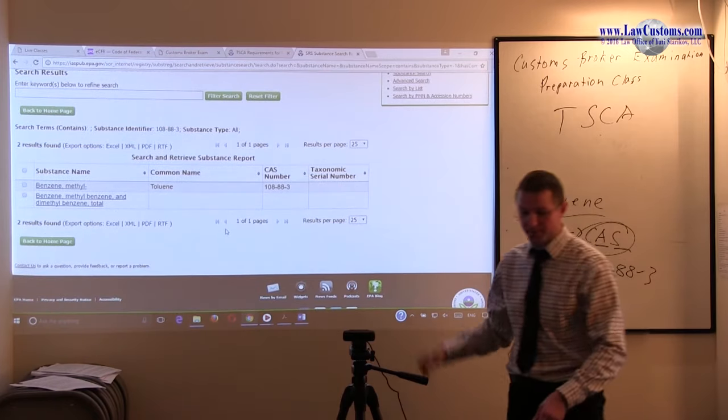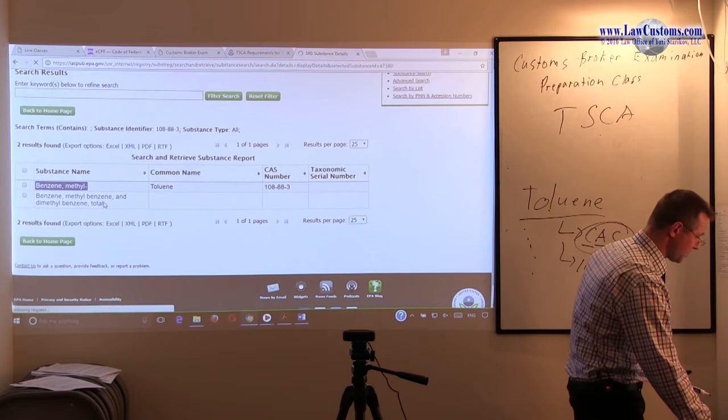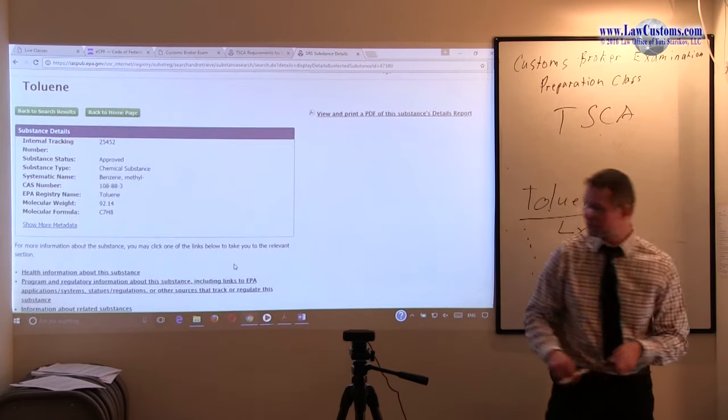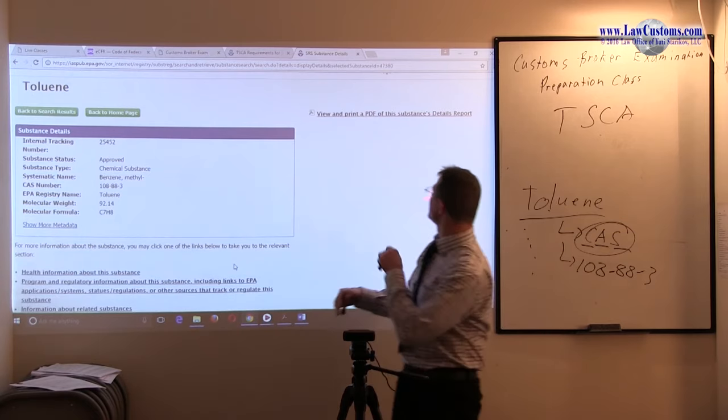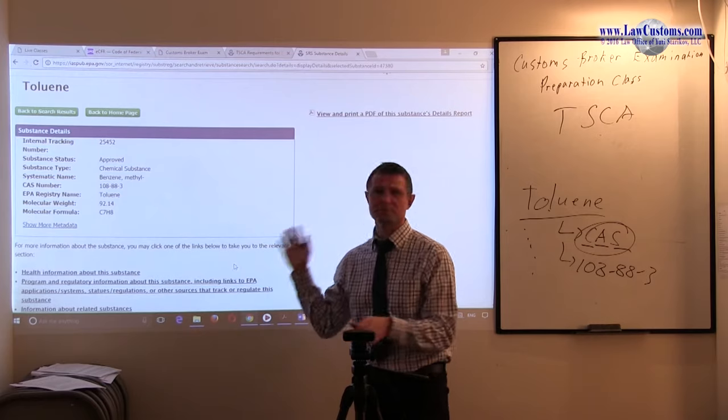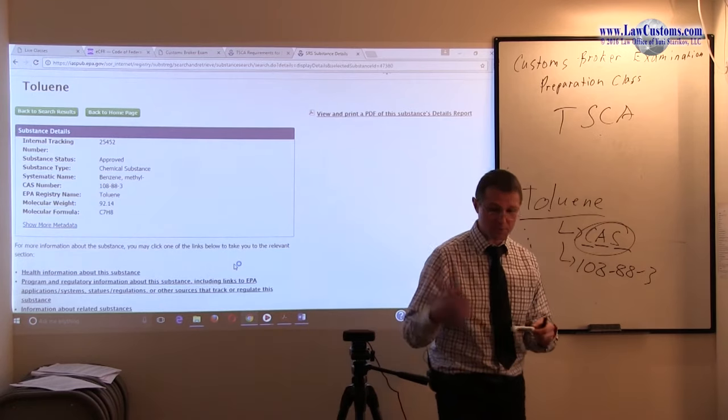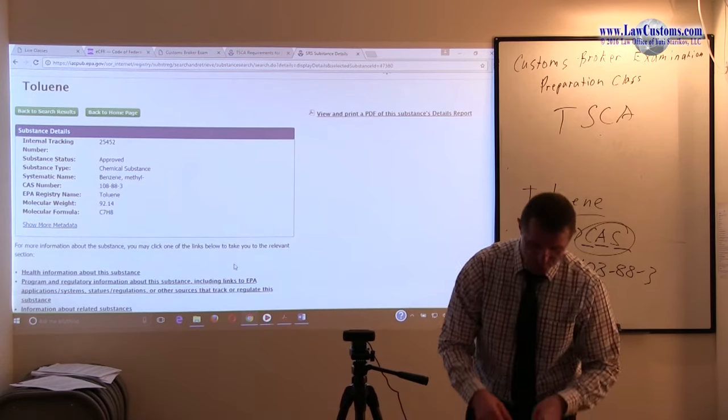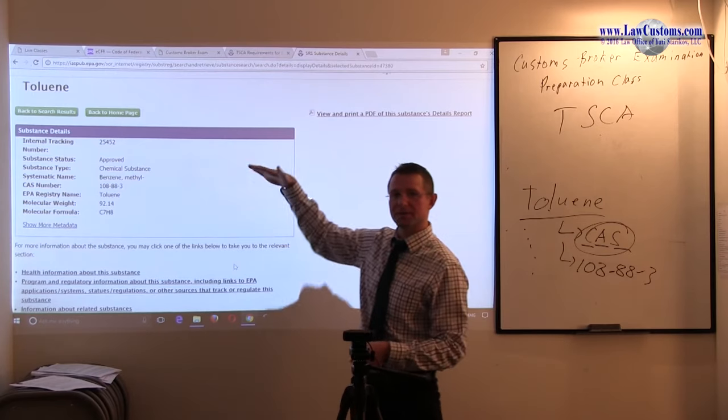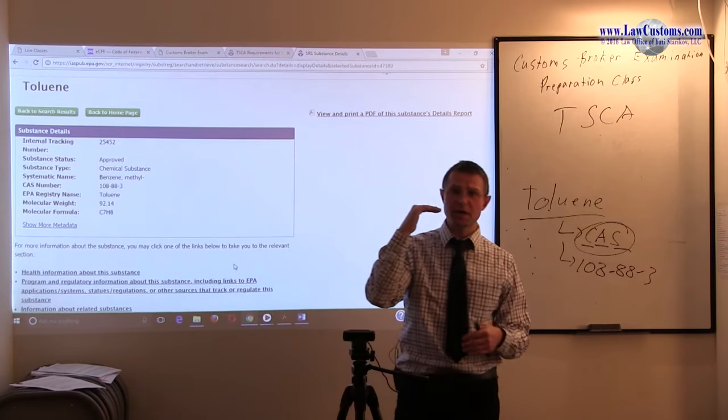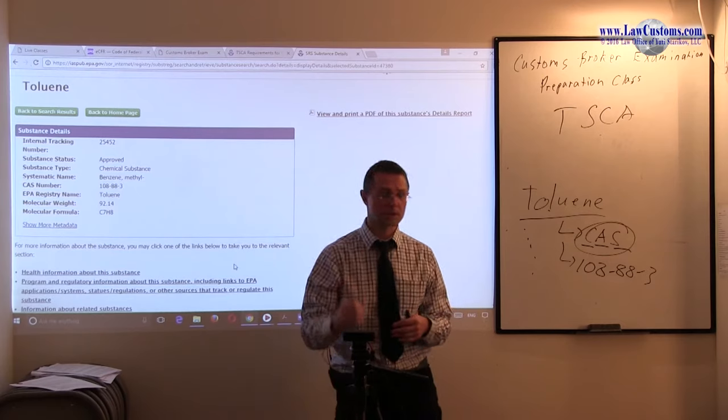It also makes the classifications so much simpler because all you need to do is know the number. The CAS number will be 108-88-3 for this chemical. What we can do is put that CAS number into the search engine, substance identifier. We have a result coming back. We have an exact match and we can see that the status is active.